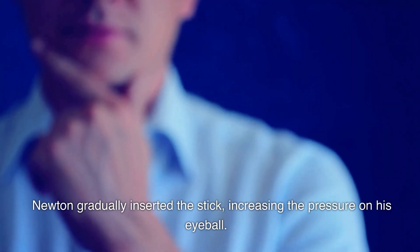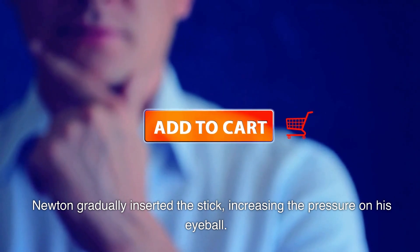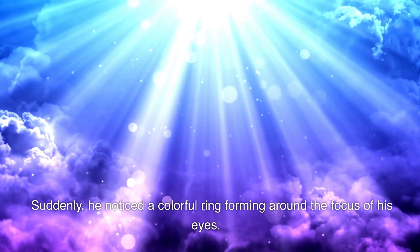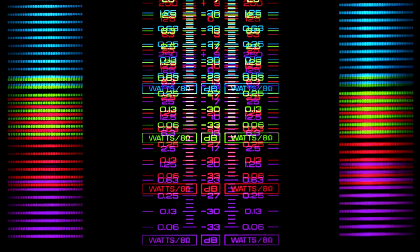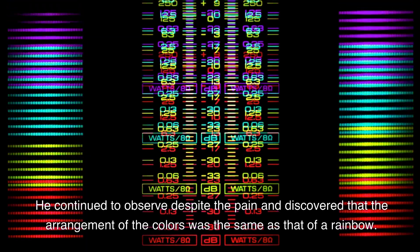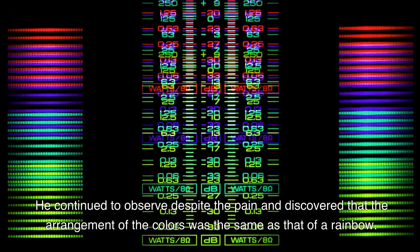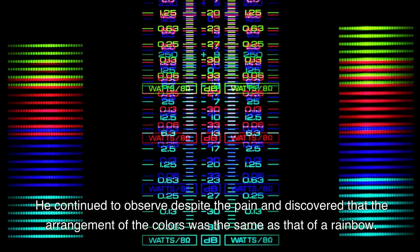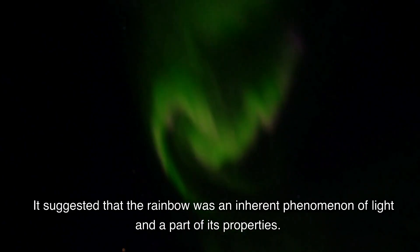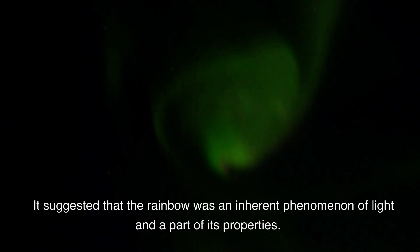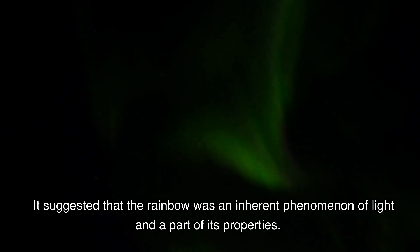Newton gradually inserted the stick, increasing the pressure on his eyeball. Suddenly, he noticed a colorful ring forming around the focus of his eyes. He continued to observe despite the pain and discovered that the arrangement of the colors was the same as that of a rainbow. This was a strange discovery. How did the rainbow appear in his eyes? It suggested that the rainbow was an inherent phenomenon of light and a part of its properties.